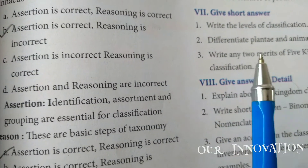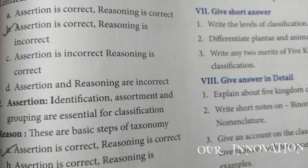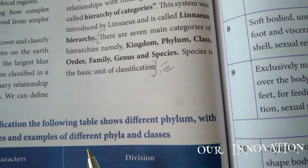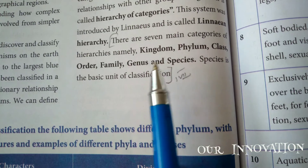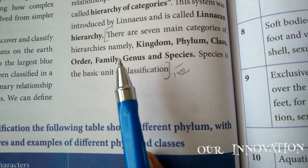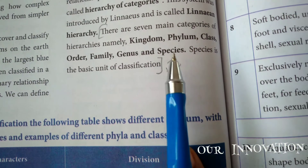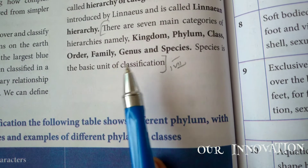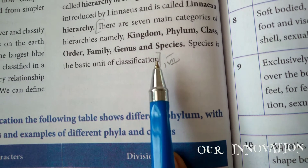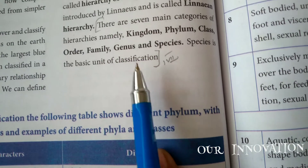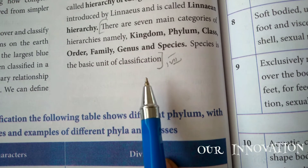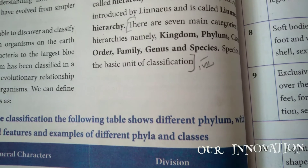Roman numeral 7: give short answers. First: write the levels of classification. Page number 74. There are seven main categories in the hierarchy namely kingdom, phylum, class, order, family, genus, and species. Species is the basic unit of classification. Write this point for the first short answer.